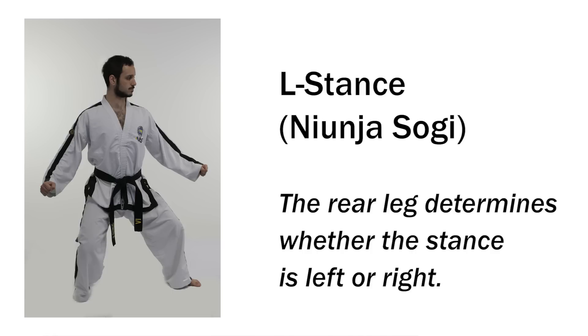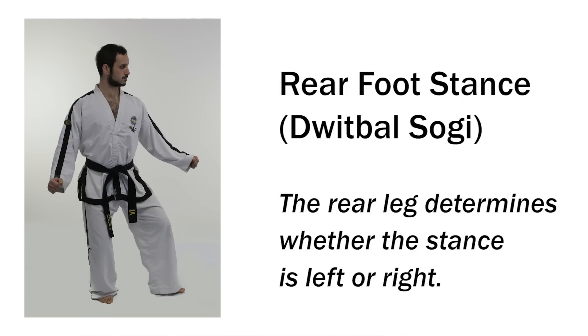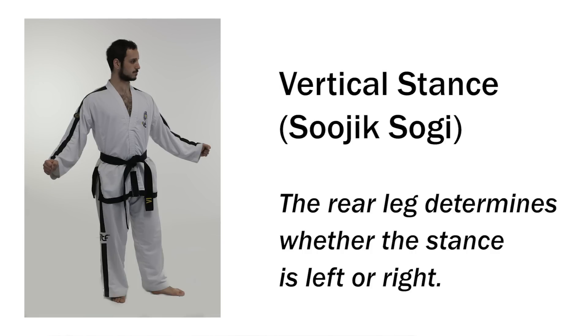So what determines whether a stance is left or right? It's the weight distribution that's the predominant factor. In stances where one leg carries more weight than the other, the leg carrying the most weight will determine whether it's a left or right stance. So in stances such as L stance, rear foot stance, and vertical stance, the rear leg will determine whether it's a left or right stance.